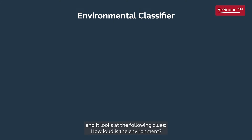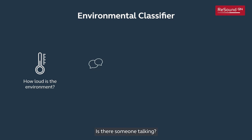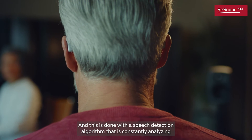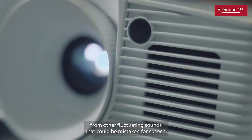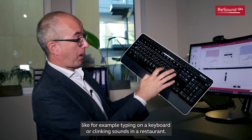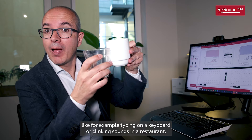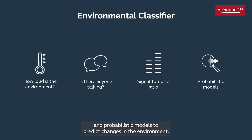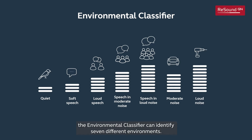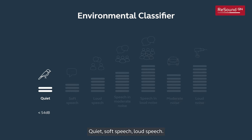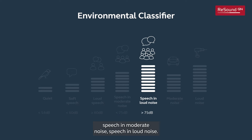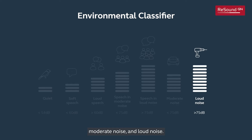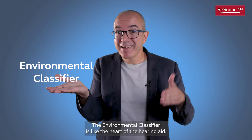The Environmental Classifier looks at the following clues: how loud is the environment, is there someone talking — and this is done with a speech detection algorithm that constantly analyzes frequency content and spectral balance to separate true speech from other fluctuating sounds that could be mistaken for speech, like typing on a keyboard or clinking sounds in a restaurant — the signal-to-noise ratio, and probabilistic models to predict changes in the environment. Based on this, the classifier can identify seven different environments: quiet, soft speech, loud speech, speech in moderate noise, speech in loud noise, moderate noise, and loud noise.